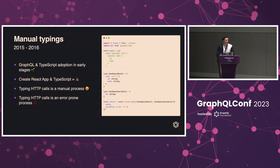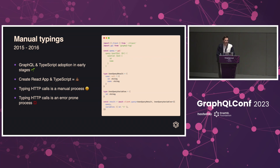The only way at that time for getting type-safe GraphQL was to manually write your typings. You had to first write your GraphQL query, then write your TypeScript type for the query, and then manually annotate it within your code. The issue is that if you make a mistake or a typo, or write the wrong type, you can get a runtime exception because what you wrote is not representing the real world. This is a very error-prone process.